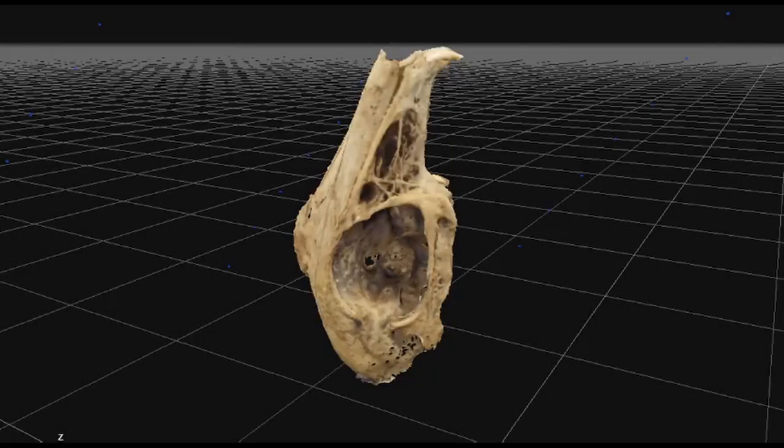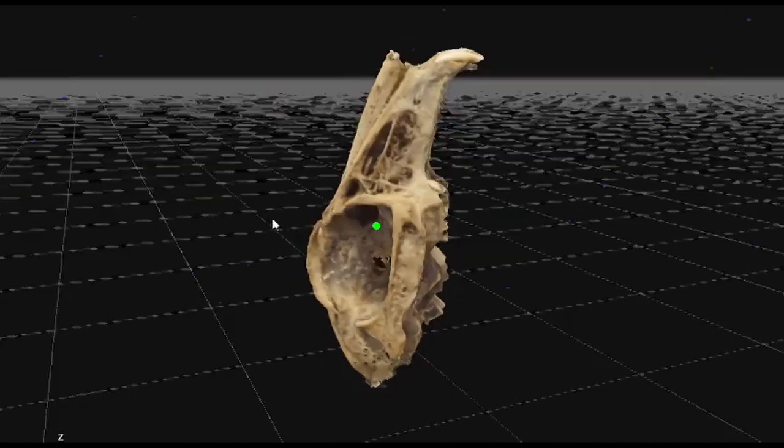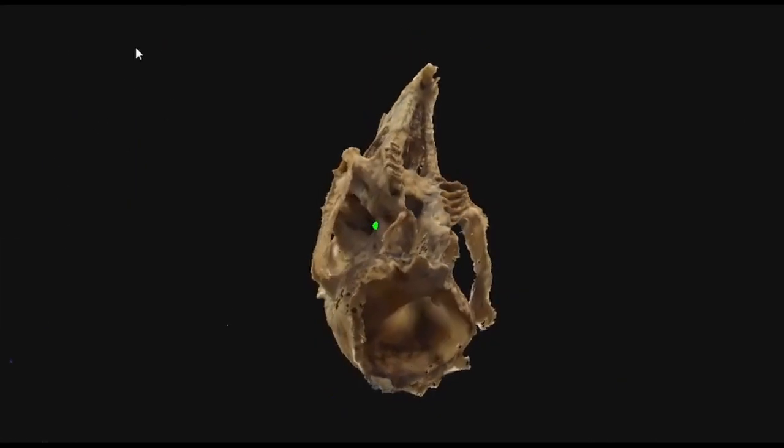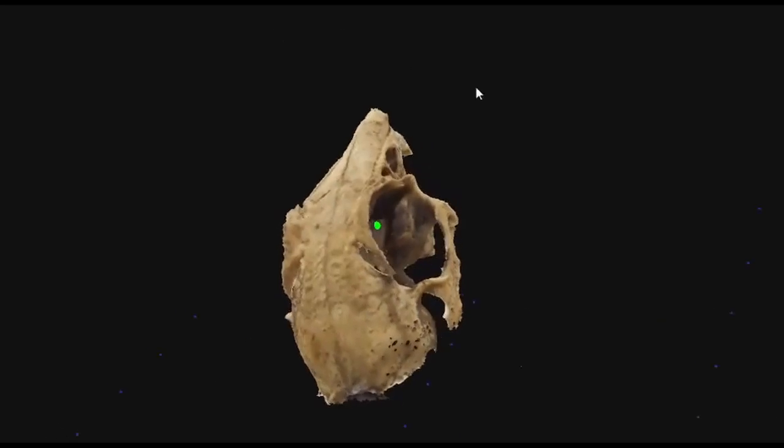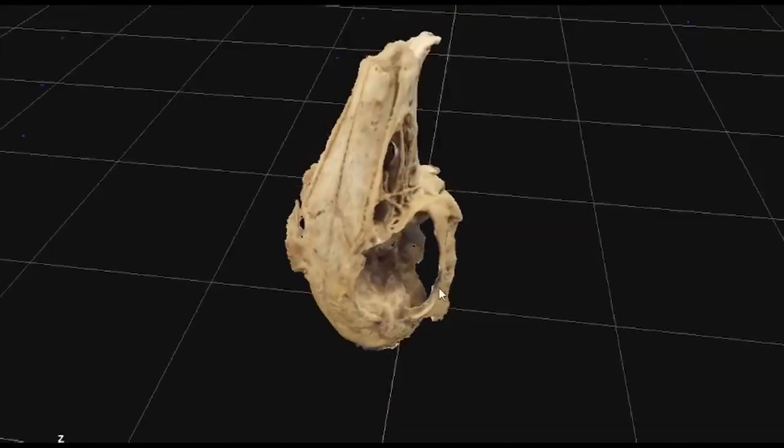Hi, I'm Mike and this is a demonstration of my 3D photogrammetry rig for small items. What we have here is a rabbit skull in 3D Zephyr Lite. I used 101 images to create this model and it's caught some good detail.